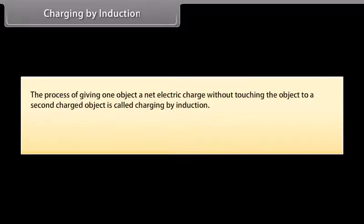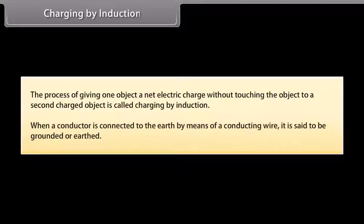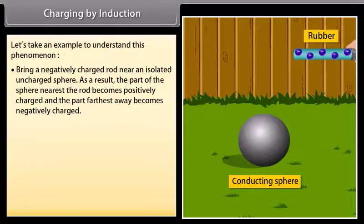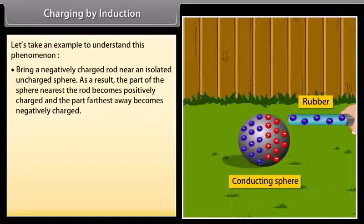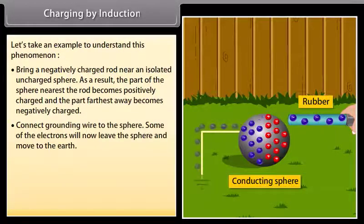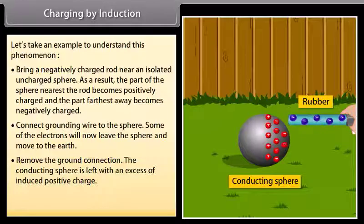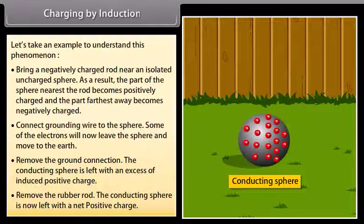Charging by induction: The process of giving an object a net electric charge without touching it to a second charged object is called charging by induction. When a negatively charged rod is brought near an isolated uncharged sphere, the nearest part becomes positively charged and the farthest part becomes negatively charged. Connecting a grounding wire allows electrons to leave the sphere. After removing the ground connection and the rod, the sphere is left with a net positive charge.